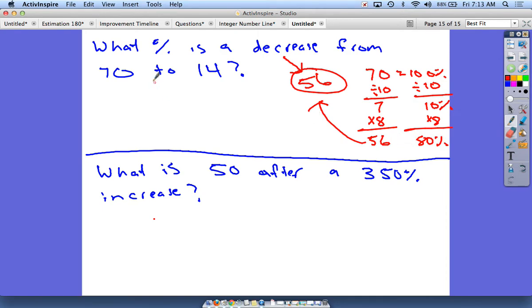So we would say that from 70 to 14, if it drops that much, that is an 80 percent decrease. 80 percent would be your answer here, and that makes sense because if you go from 70 down to 14, you're going more than halfway down to 0, so it should be a pretty big decrease and it's 80 percent.